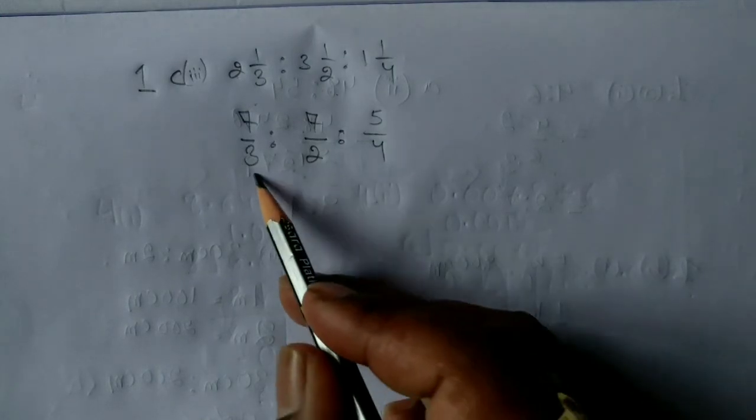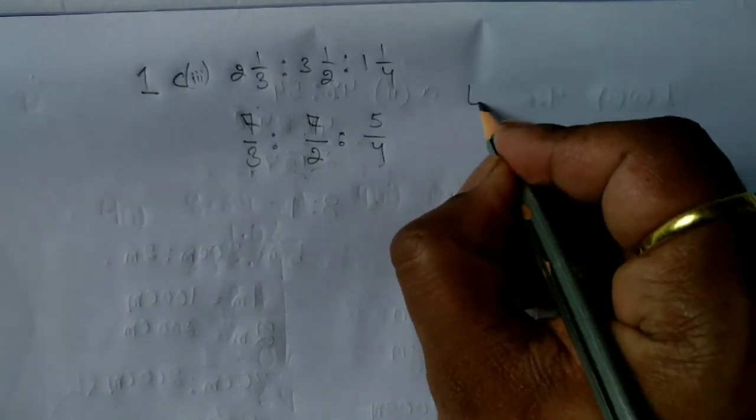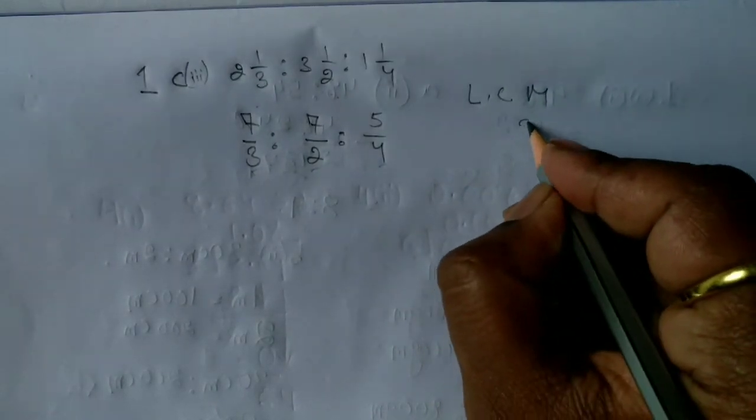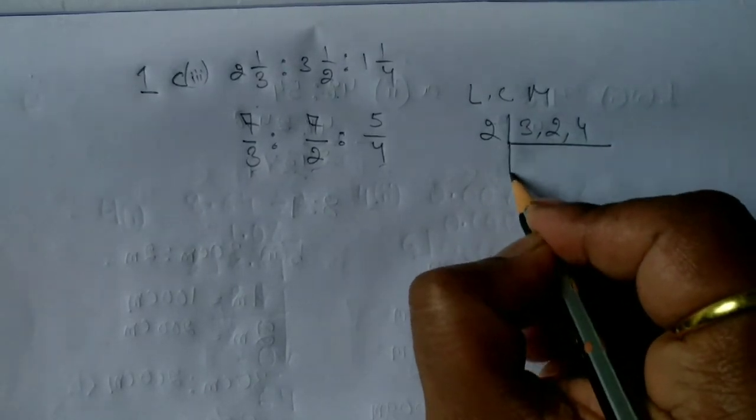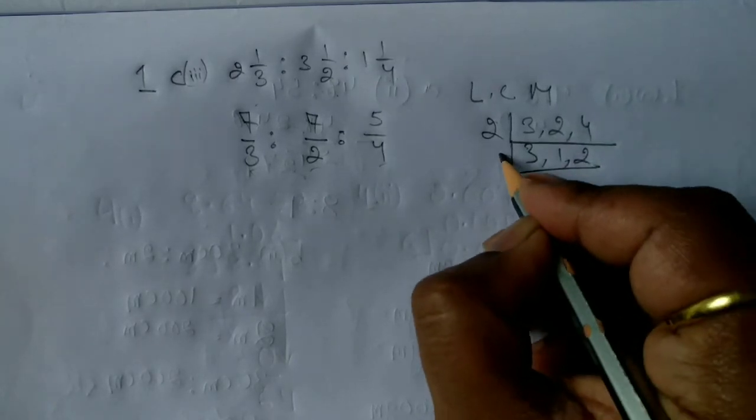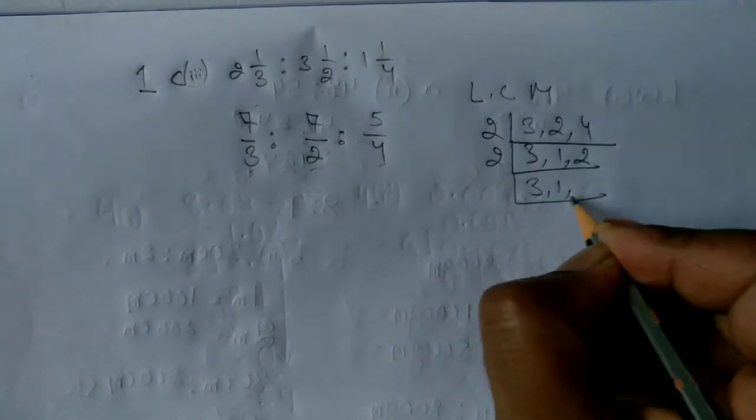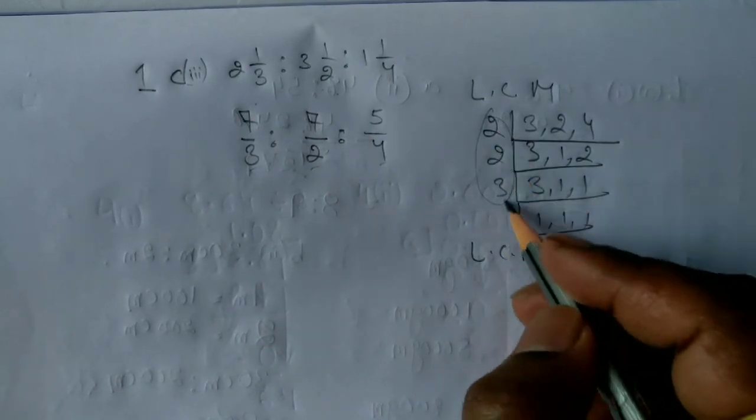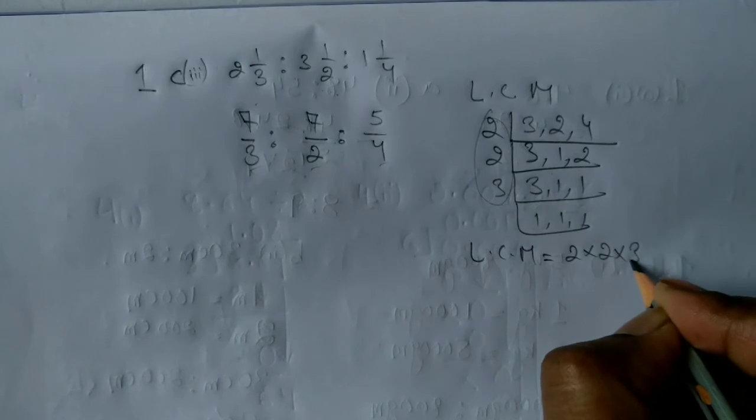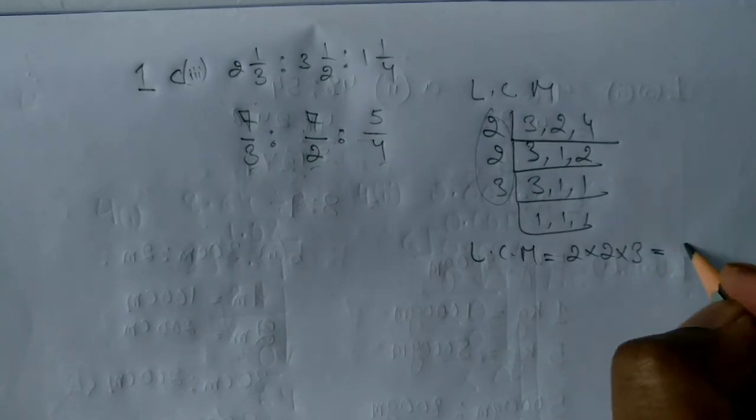The next step will be finding the LCM of these three numbers which is at the denominator. So let me find the LCM here. The numbers are 3, 2, and 4, and you are supposed to find the LCM. So first number I would like to take 2, 2 again, and now 3. So the LCM will be 2 into 2 into 3, which is coming up to 12.